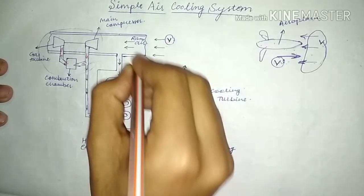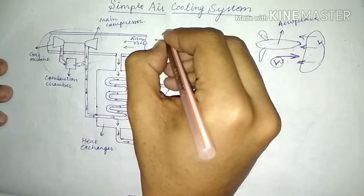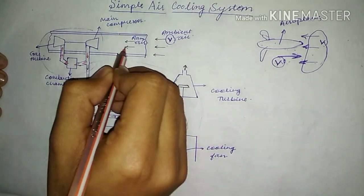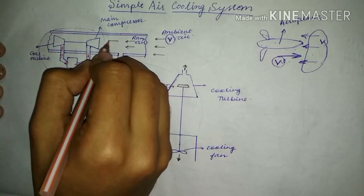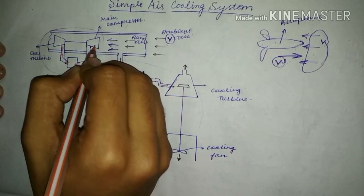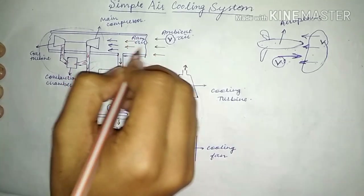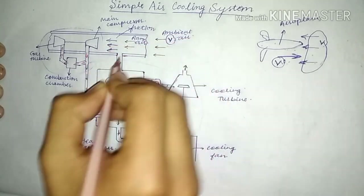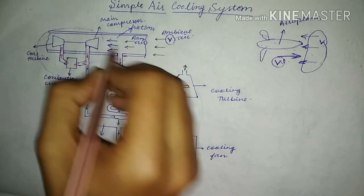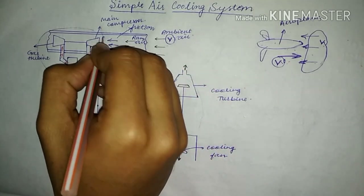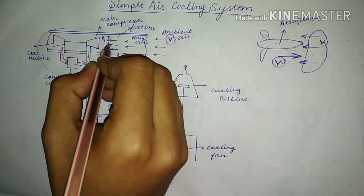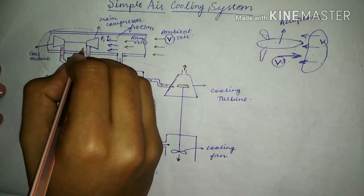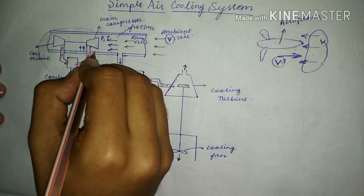The air present in the atmosphere is called ambient air. This ram air is fed into the compressor. As this ram air travels through the inlet, friction raises some of its pressure and temperature, giving it some initial pressure P and temperature T before entering the compressor.